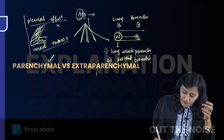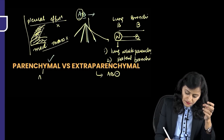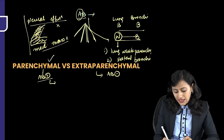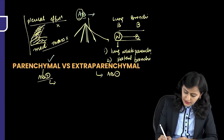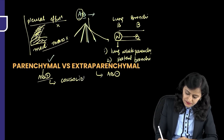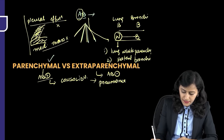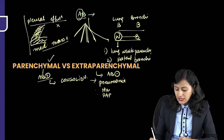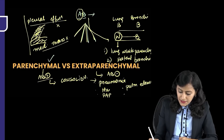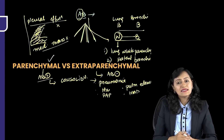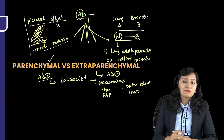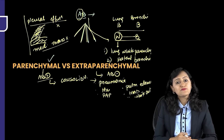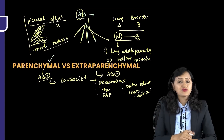Explanation: Extra-parenchymal pathologies — air bronchogram absent. Parenchymal pathologies with white alveoli but patent bronchi give the air bronchogram present. The air bronchogram is seen when the lung becomes white, i.e., consolidation. This could be due to pneumonia, pulmonary hemorrhage, pulmonary alveolar proteinosis, pulmonary edema, or hyaline membrane disease — bilateral white-out lungs in a newborn.